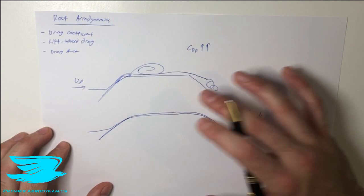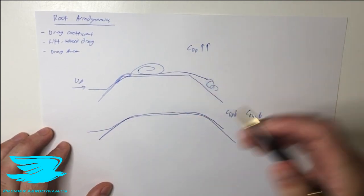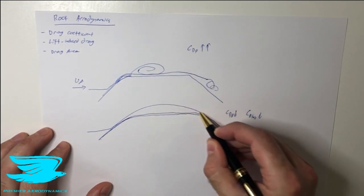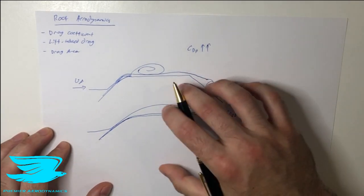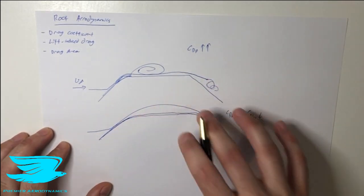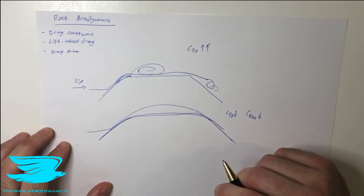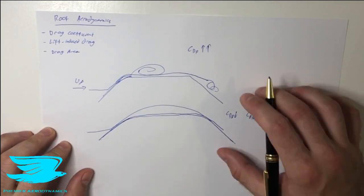So the question is, is there really a limit to how much we should be rounding this? Can we just do a complete dome like this, and this will reduce the drag even more? Because if a little bit of rounding is good, is a lot of rounding even better? Well, the answer is no. And for a couple of reasons.